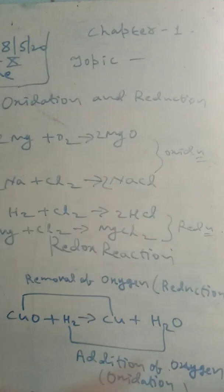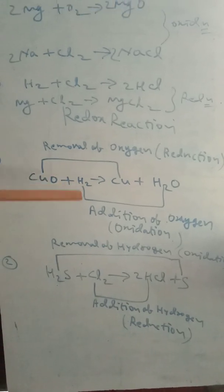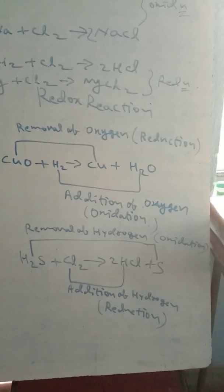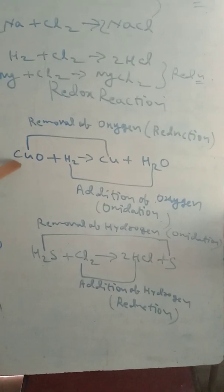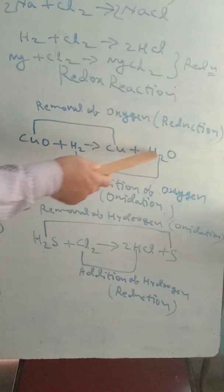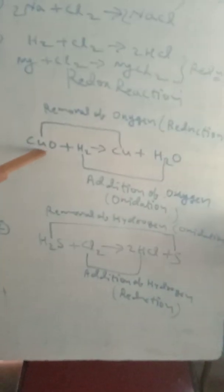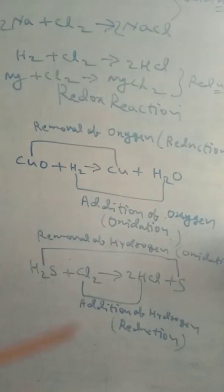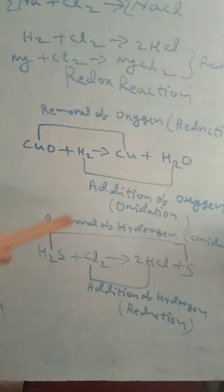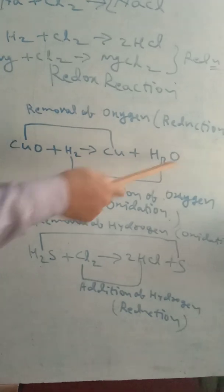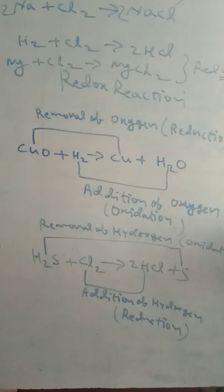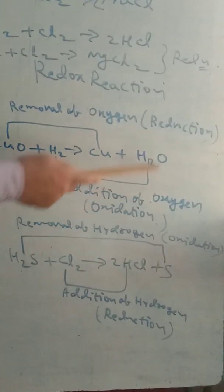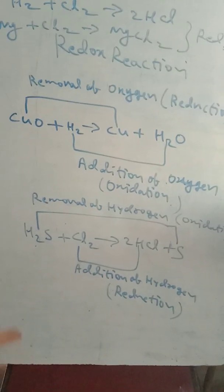So I have discussed Oxidation and Reduction — now Redox reaction. When Oxidation and Reduction take place simultaneously, this is called a Redox reaction. First example: Copper Oxide reacts with Hydrogen to form Copper and Water. Here, Oxygen is removed from Copper — this is Reduction. Hydrogen is converted into Water, meaning Oxygen is added to Hydrogen — this is called Oxidation. Since both Oxidation and Reduction take place, it is called a Redox reaction.